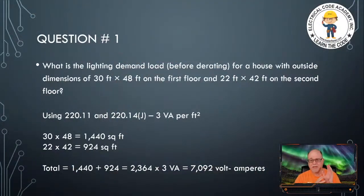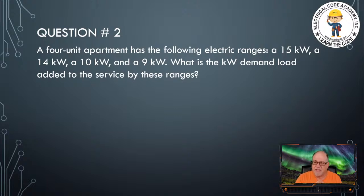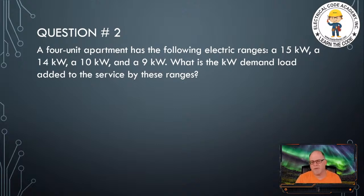That wraps up question one. Moving on to question two: a four-unit apartment has the following electric ranges — a 15kW, a 14kW, a 10kW, and a 9kW. We're trying to calculate the service range contribution for this building. The question only wants the range contribution for the overall building with these four different ranges.